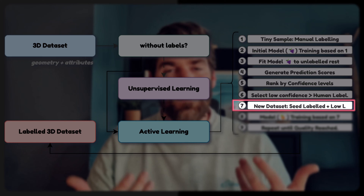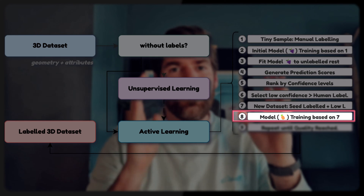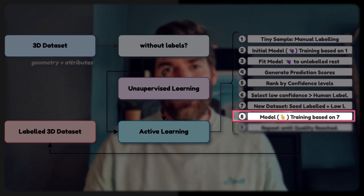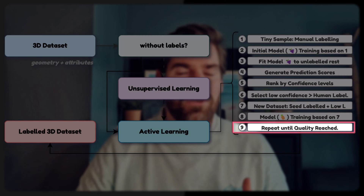You can establish a labeling process in your organization or research team, which makes this very efficient. After completing that labeling effort, step seven is to concatenate the initial labeled seed data with the newly labeled low-confidence data to form your new dataset. Step eight: we train a new model on this expanded dataset — that's iteration two.